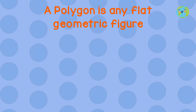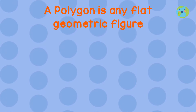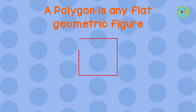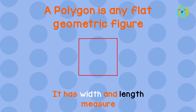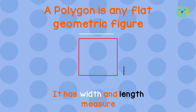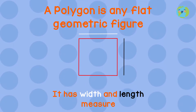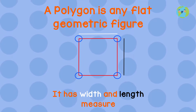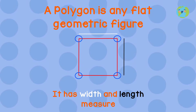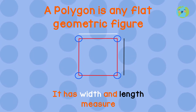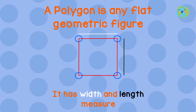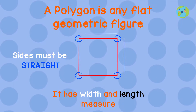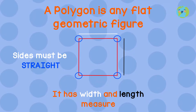The first thing you should know is that a polygon is any flat geometric figure. It means that they have a width and a length measure. They must be closed, which means that they must not have any small gaps since all their sides are joined, and these sides must be straight. They can never be curved.